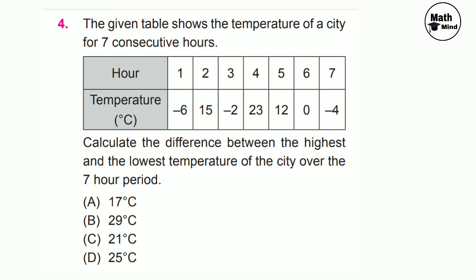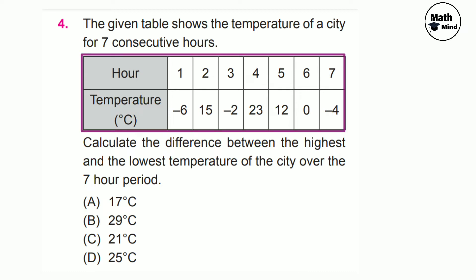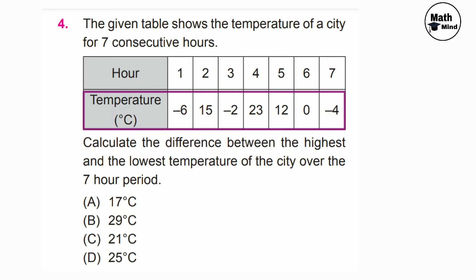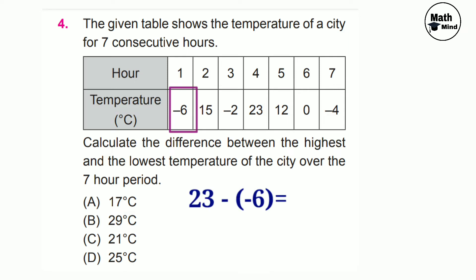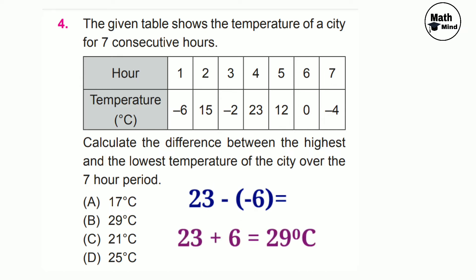Question number 4: the given table shows the temperature of a city for 7 consecutive hours. Calculate the difference between the highest and lowest temperature over the 7-hour period. From the table, 23°C is the greatest value and −6°C is the lowest. To find the difference, subtract the lowest from the highest: 23 minus (−6). Negative of negative equals positive, so 23 plus 6 equals 29°C. Option B is correct.